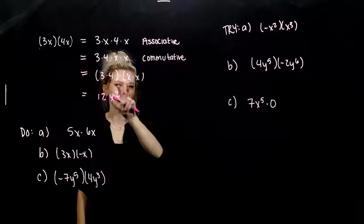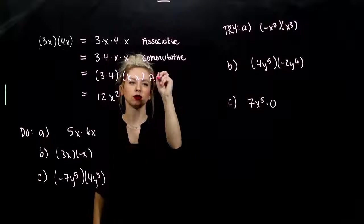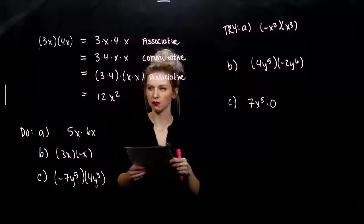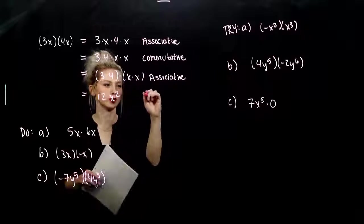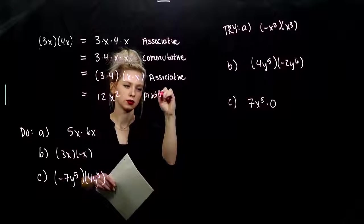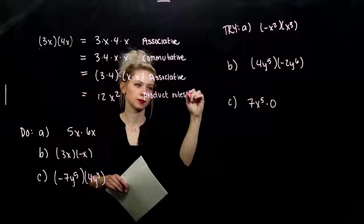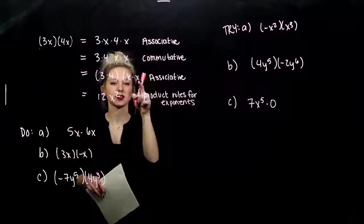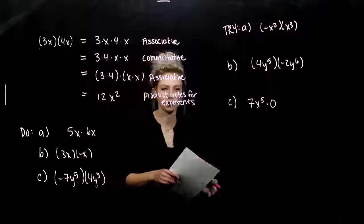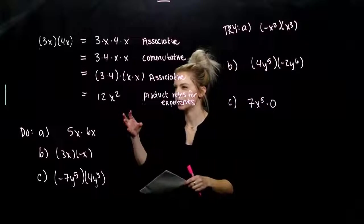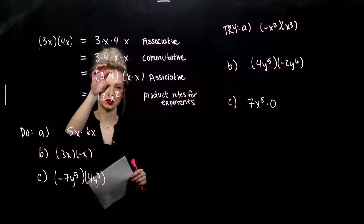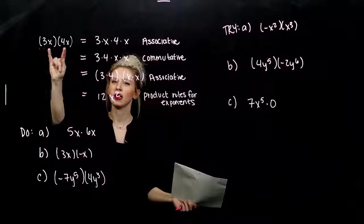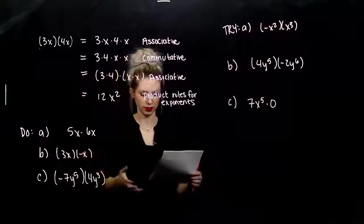And, we're allowed to put parentheses back in there using the associative law. Then, we can just evaluate. And, in this case, use those product rules for exponents. So, we can combine x times x and write it as x squared. So, in the end, what's happening? We can take our constants and multiply them together, since multiplication is commutative and associative. And, we can take our variables and multiply them together as well.